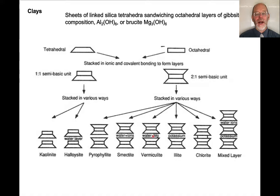Pyrophyllite has no interstitial cation. Smectite has water. Vermiculite has water plus magnesium. Illite has potassium. And there are also mixed-layer clays or mixed-layer sheet silicates, where the interstitial horizon can contain variable materials — one layer containing potassium, another containing water, and so on.